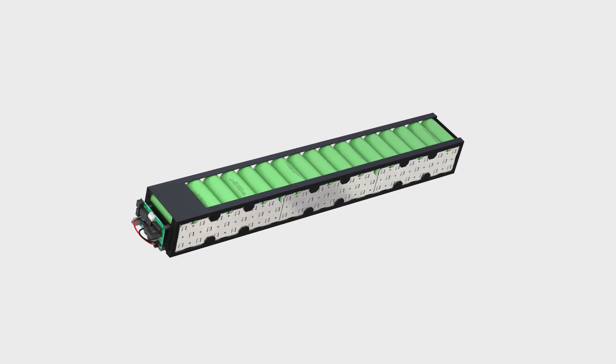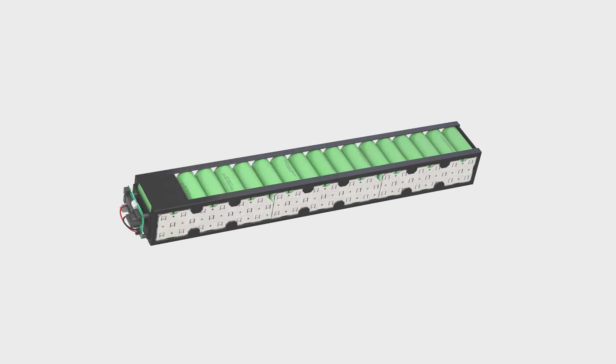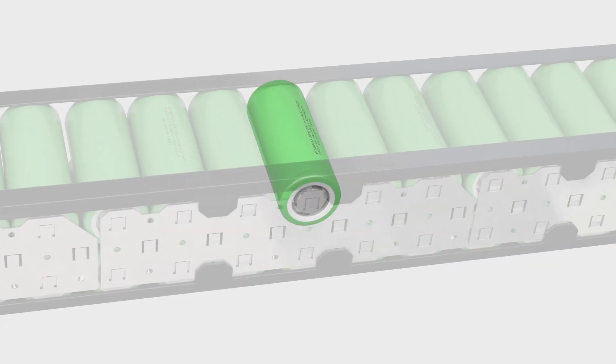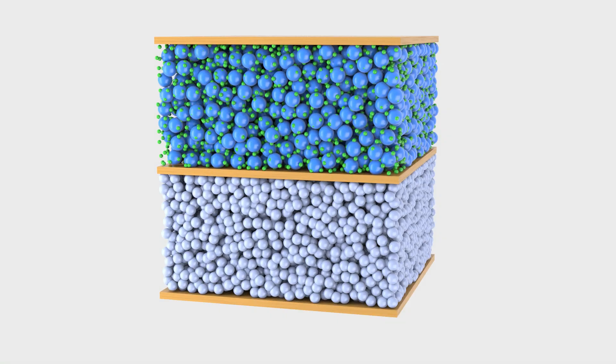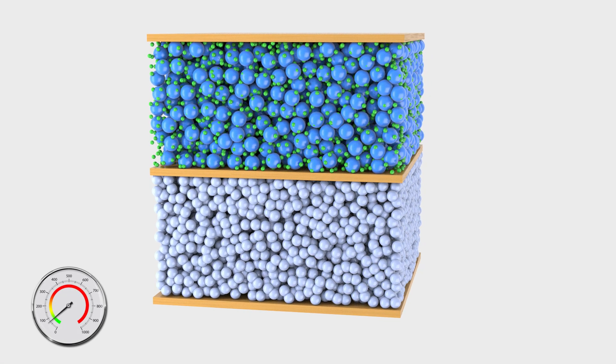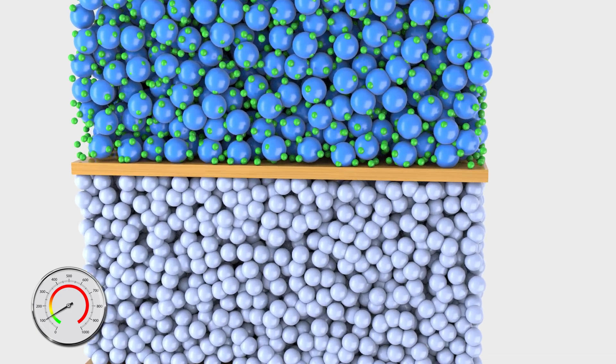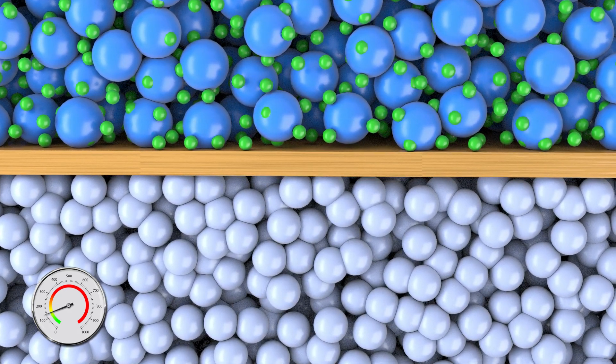Thermal runaway begins when the battery suffers some kind of abuse that causes the battery to rapidly release its stored energy in the form of heat. When the heat generated by the battery exceeds its ability to dissipate the heat, the temperature within the battery starts to rise.